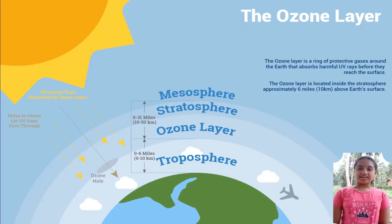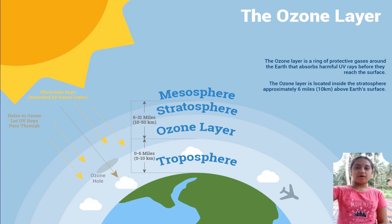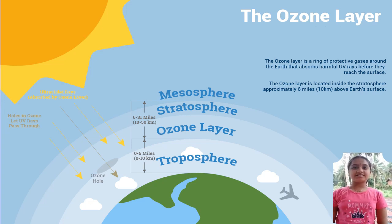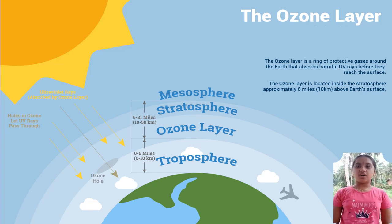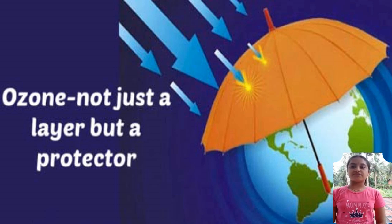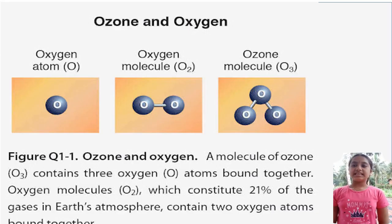My name is Janari. I am going to talk about what the ozone layer is and what it is made up of. The ozone layer is a region in the earth's stratosphere that contains high concentrations of ozone and protects the earth from the harmful ultraviolet radiations of the sun. Ozone is a molecule made up of three oxygen atoms.